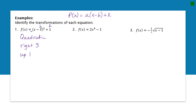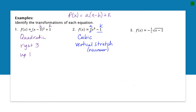The next equation is cubic. I have an a value — the number in front of x — which tells me the graph is going to be stretched vertically, so I'll write down vertical stretch. Remember, that means the graph will look narrower. I also have a k value of minus one, so that means it's going to be shifted down one.